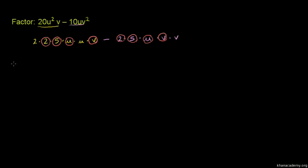When we multiply these common factors together: 2 times 5 is 10, times u, times v. So the common factor is 10uv.